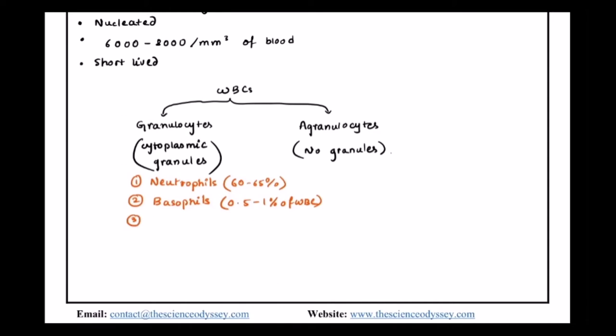Third are the eosinophils. And the eosinophils are about 2 to 3% of the whole WBC.